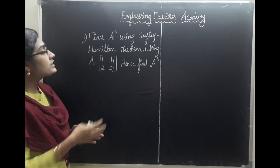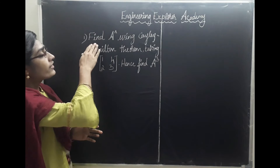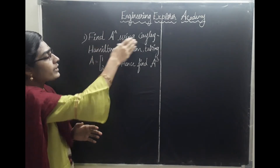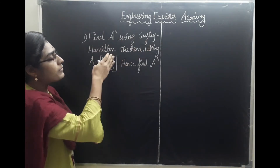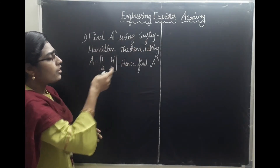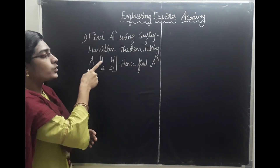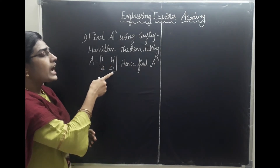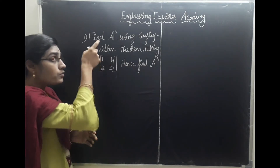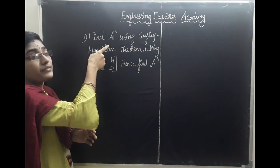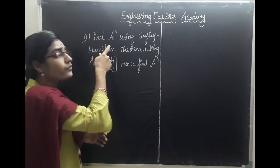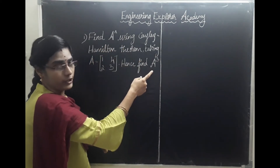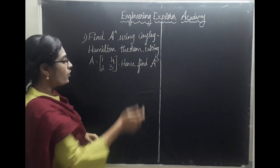The problem is: we need to find A power N by using the Cayley-Hamilton theorem for the matrix A equal to [[1, 4], [2, 3]], and by using that A power N value, we need to find the value of A cube.